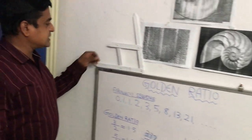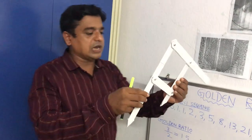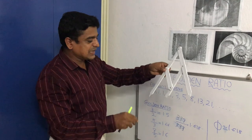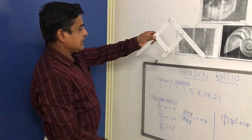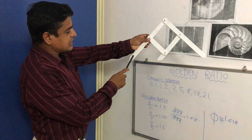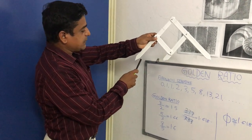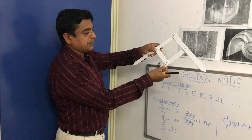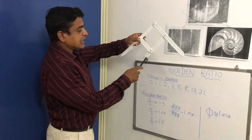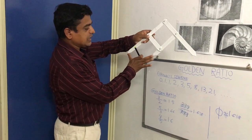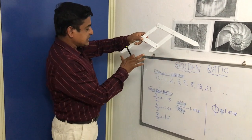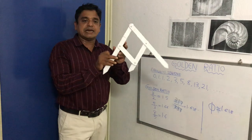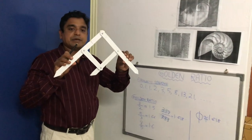This is called the golden ratio caliper. I have prepared this golden ratio caliper. It moves in this way. There are three hands — one, two, three. The length between the first hand and second hand, and the length between the second hand and third hand — they follow the Fibonacci sequence. If the first length is two, the second becomes three. If this length is three, this becomes five. If this length is thirteen, then this becomes twenty-one. I have prepared this golden ratio caliper in such a way that it follows the Fibonacci sequence.